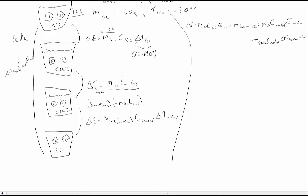Let's go ahead and finish solving this problem. Moving the soda term to the other side of the equation gives us: M_ice × C_ice × ΔT_ice + M_ice × L_ice + M_ice × C_water × ΔT_water = −M_soda × C_soda × ΔT_soda.